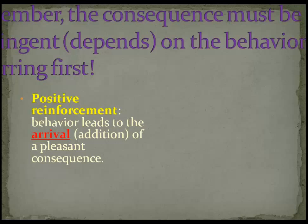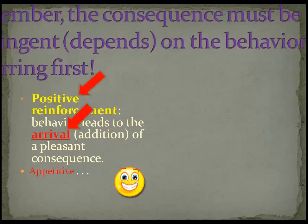Positive reinforcement is a type of reinforcement that occurs when a behavior leads to the arrival or addition of a pleasant consequence. That consequence is called an appetitive consequence — appetitive means pleasant or desirable. The word 'positive' in this case means the arrival of something; it doesn't mean good. It means your behavior led to the arrival of a pleasant consequence. For example, you put chocolate in your mouth and the consequence that arrives is good taste — that appetitive, pleasant consequence.